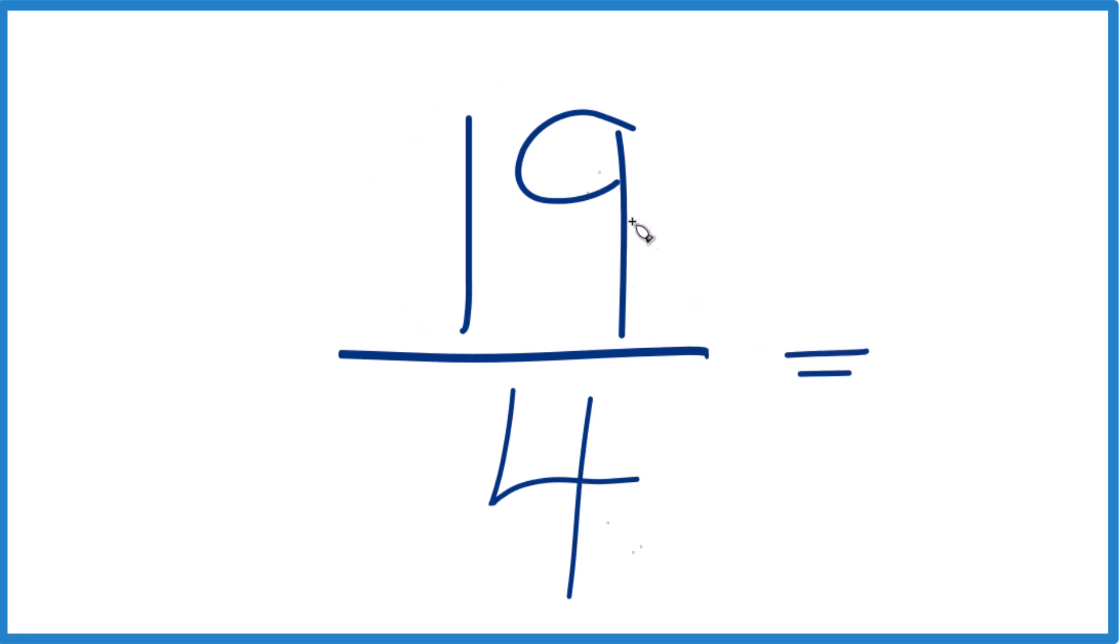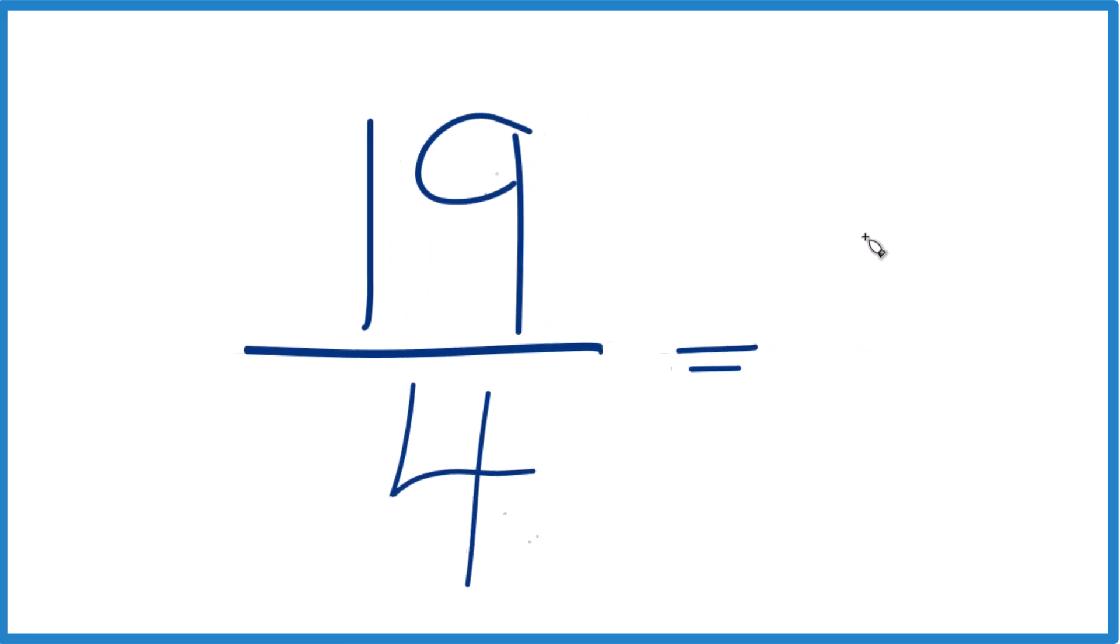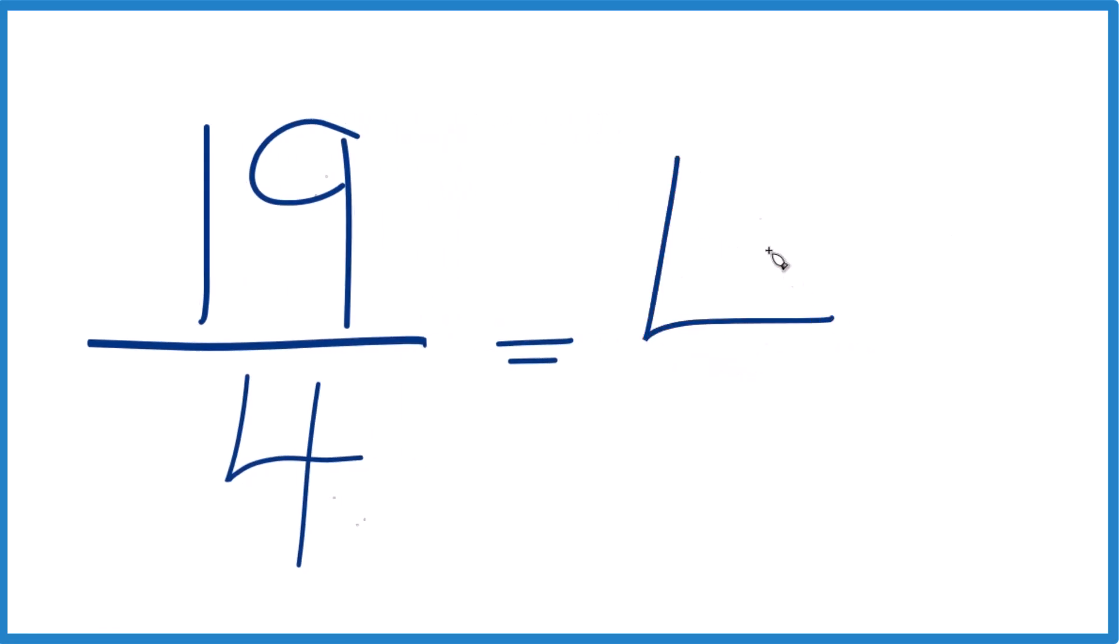4 goes into 19. Let's see, 4 times 4, that would be 16. 4 times 4 is 16, and we'd have 3 left over.